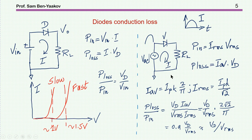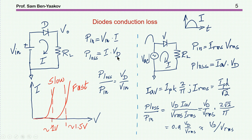Let's talk about diode conduction losses, starting with the DC case: we have a diode and then a load, with a current flowing. The input power is Vin times I. The loss will be I times the voltage of the diode. I'm assuming the diode represents a constant or fixed voltage drop.